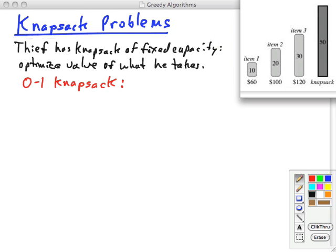In both knapsack problems, we have a thief with a knapsack of fixed capacity, and the thief wants to optimize the value of what he takes. In the zero-one knapsack problem, there are n items, and item i has some value v_i and weighs some weight w_i. This is called the zero-one knapsack problem because you have to either take an item or not take an item. Zero is not taking it, one is taking it.